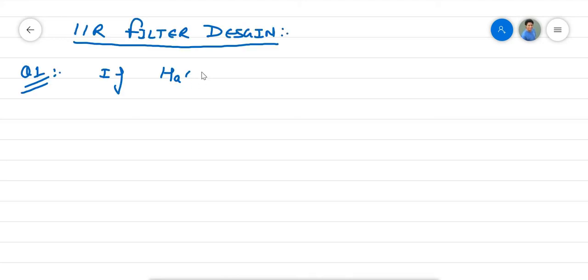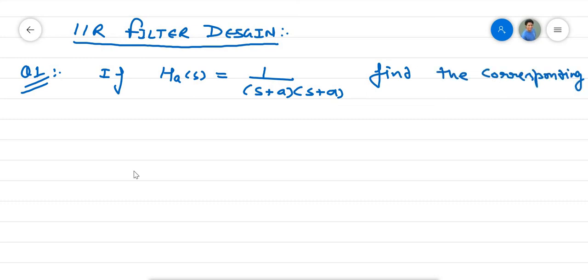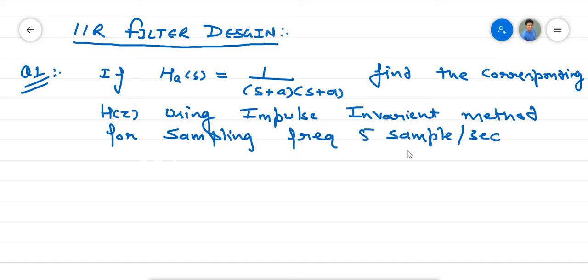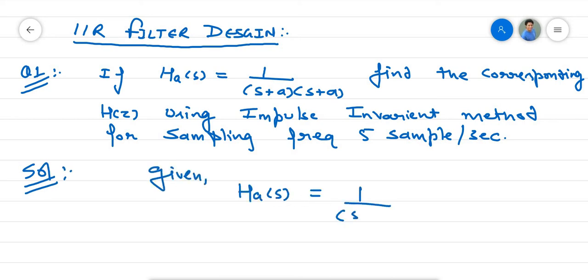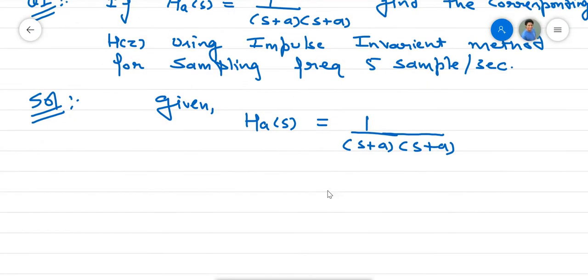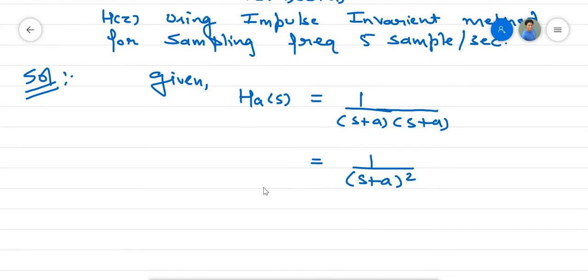The first example in that series is: if H(s) equals 1 over (s+a) times (s+a), find the corresponding H(z) using the impulse invariant method for sampling frequency 5 samples per second. The given H(s) equals 1 over (s+a)(s+a), which can be written as 1 over (s+a) squared. Also given, Fs is equal to 5 samples per second.